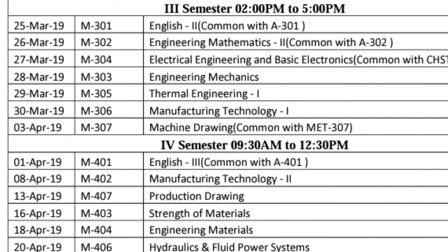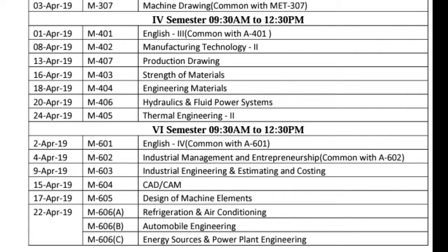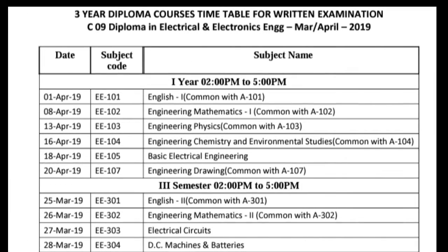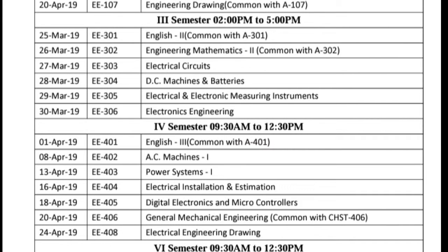Continuing Mechanical Engineering: fourth semester and sixth semester. Next branch is Electrical and Electronic Engineering — March-April 2019 — date, subject code, subject name, covering first year, third semester, fourth semester, and next semester.